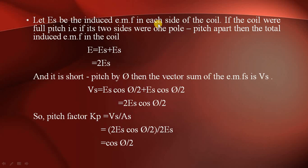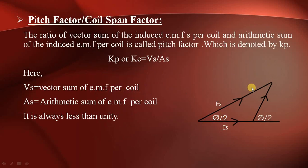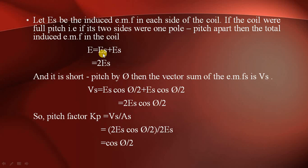Let ESC be the EMF induced in each side of the coil. If the coil were full-pitched, that is if its two sides were one whole pitch apart, then the total induced EMF in the coil is E equals ES plus ES, which equals 2ES. For a full pitch coil the total induced EMF is 2ES.